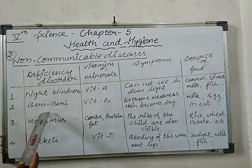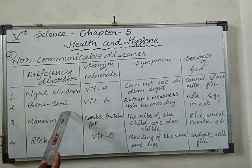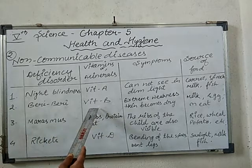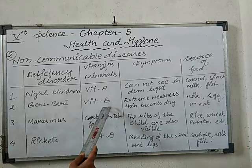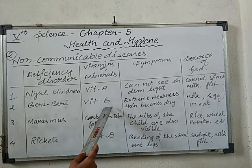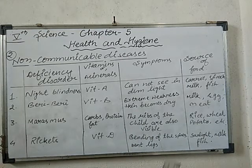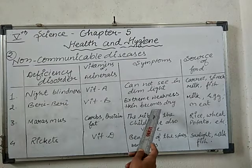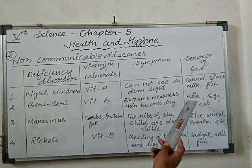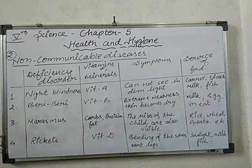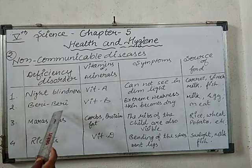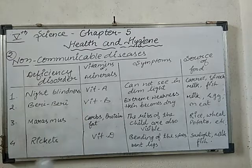The next one is beriberi. Beriberi is caused due to the lack of Vitamin B in our body. What is the symptom? A person feels extreme weakness, and their skin becomes dry and scaly. To get rid of beriberi, milk, egg, and meat are the main food sources which we need to include in our diet.